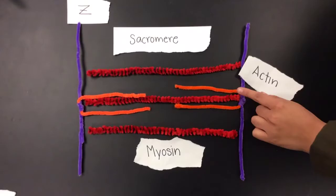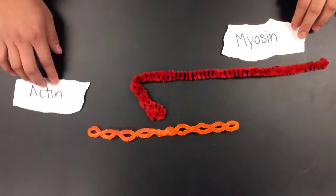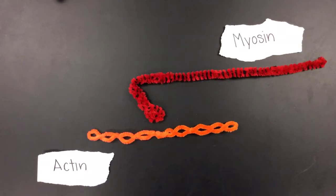Myosin, actin, and the actin are bound to the Z lines. For simplification we are going to use one myosin head and one actin fiber so that you can see how it works at a smaller level.